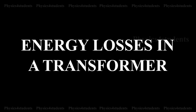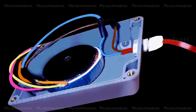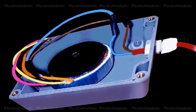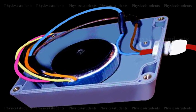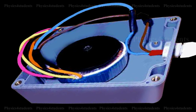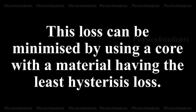Energy Losses in a Transformer. Hysteresis Loss: The repeated magnetization and demagnetization of the iron core caused by the alternating input current produces loss in energy, related to hysteresis loss. This loss can be minimized by using a core with a material having the least hysteresis loss.